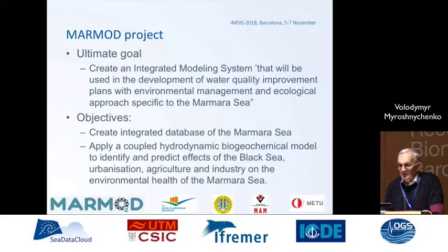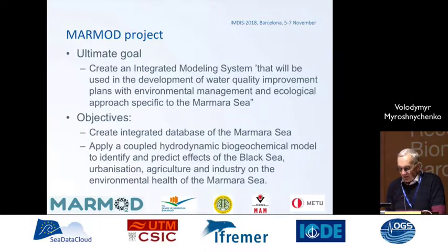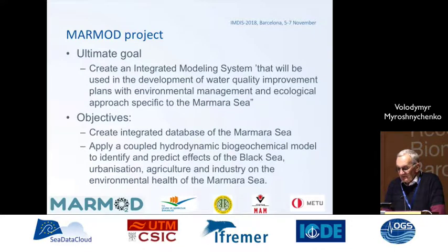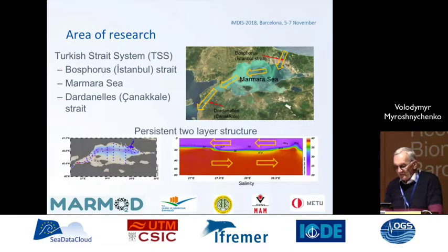The ultimate goal of the project is to create an Integrated Modeling System that will be used in the development of water quality improvement plans with an environmental management and ecological approach specific to the Marmara Sea. The specific objectives are to create an Integrated Database of the Marmara Sea for the first time, and to apply a coupled hydrodynamic-biochemical model to identify and predict the effects of the Black Sea, urbanization, agriculture, and industry on the environmental health of the Marmara Sea.